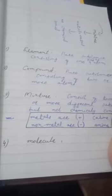Today I'll be telling you some basics of chemistry. Number one: Element. An element is a pure substance consisting of one kind of atom, meaning the same kind of atom. Now, compound: A pure substance consisting of two or more atoms is called a compound.